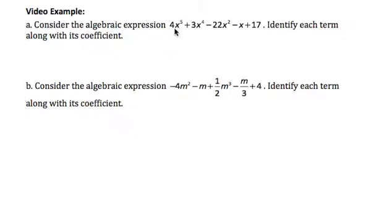So the algebraic expression is 4x to the 5th plus 3x to the 4th minus 22x squared minus x plus 17. And when we work with algebraic expressions, we need to understand that the terms are really all joined by plus. So let's see what that looks like. If I write all the terms connected with a plus sign,